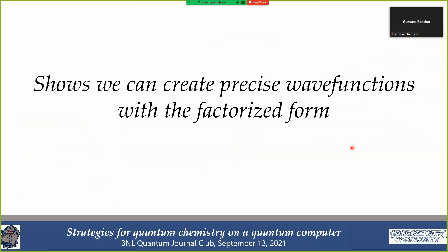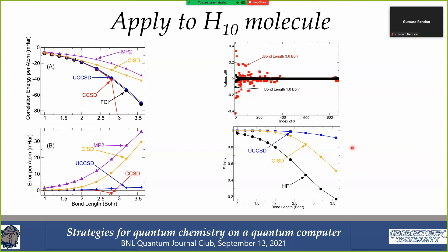To summarize: we can create very precise wave functions using UCC in factorized form — here we're preparing the exact ground state. Applying this as a variational calculation to the H10 molecule as a function of bond stretch, coupled cluster singles and doubles does well until strong correlation sets in and fails. Unitary coupled cluster singles and doubles (blue curves) remains always variational and stays very close to full CI even out to large stretches.